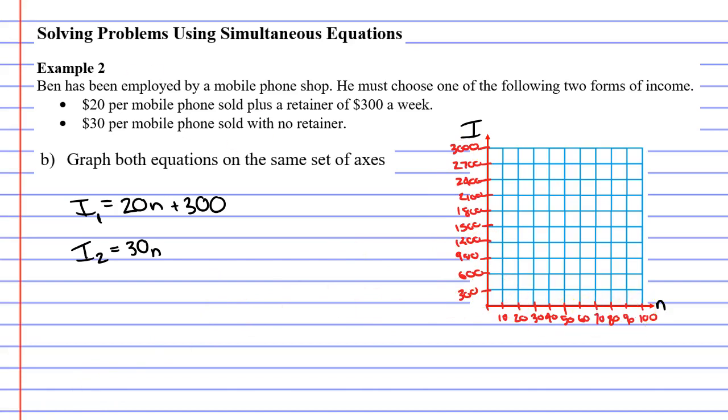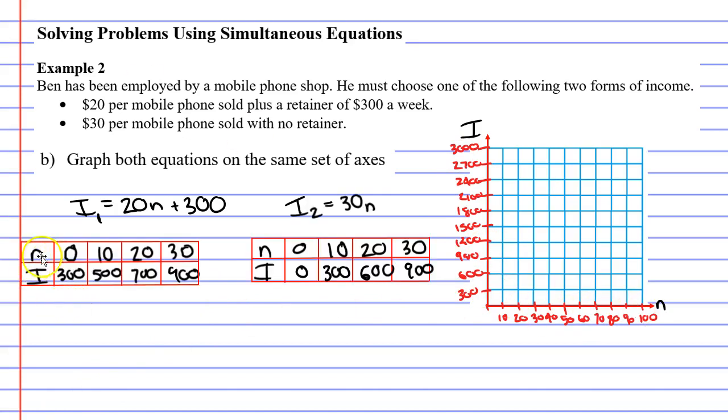That's looking pretty good so far. Now, I just went and grabbed the table of values from the previous slide just to help us do this. We'll label some points. So looking at equation one, we've got 0, 300, 10, 500, 20, 700, and 30, 900.